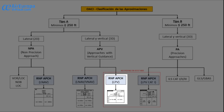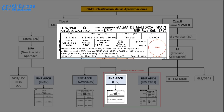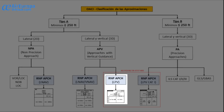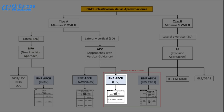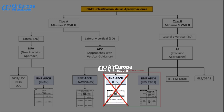As you can see in this example for Palma de Mallorca, the approach published for RW06L specifies it is an LPV approach with the EGNOS channel associated. However, nowadays most 737s currently flying do not have this onboard equipment for LPV approaches, with the exception of planes that have FMC version 14.0 and multimode receiver equipment onboard. Of course, on the 737 MAX they will have this feature. In our case, for a Europa Virtual Fleet, we are not able to fly this type of approach.